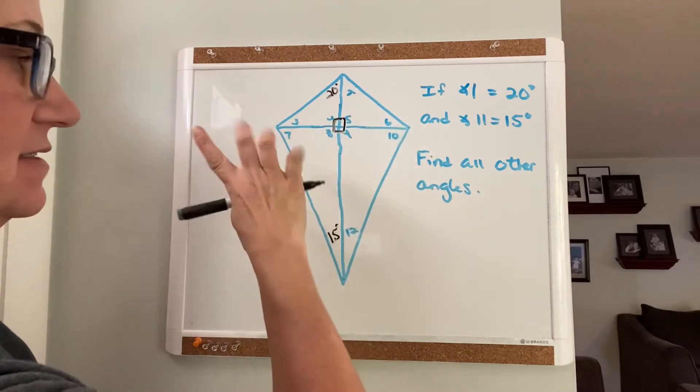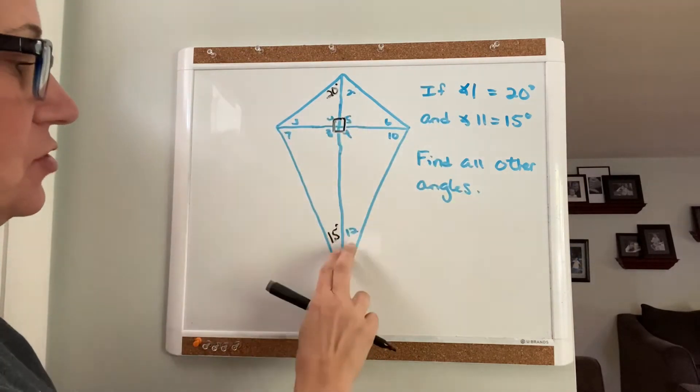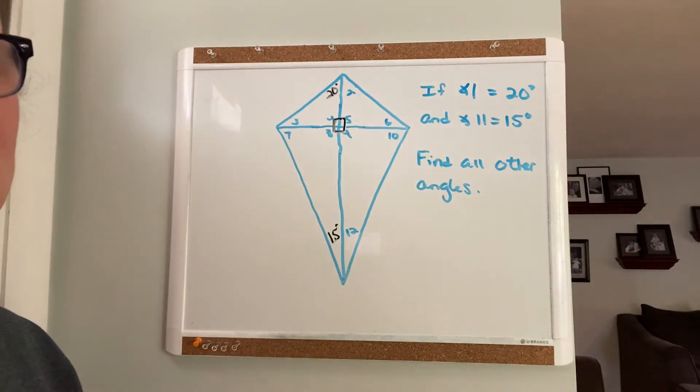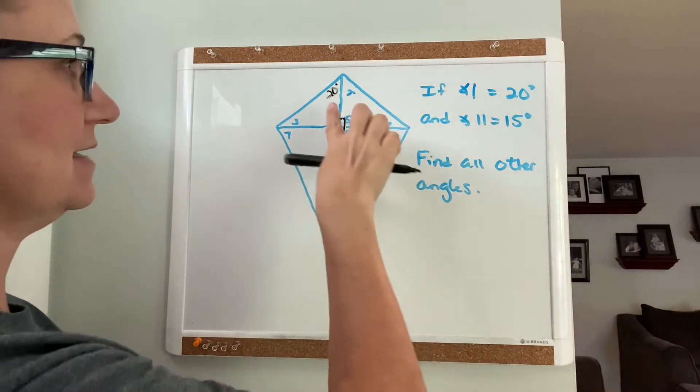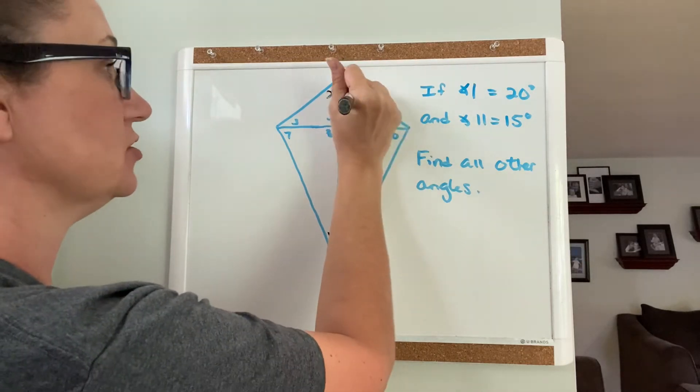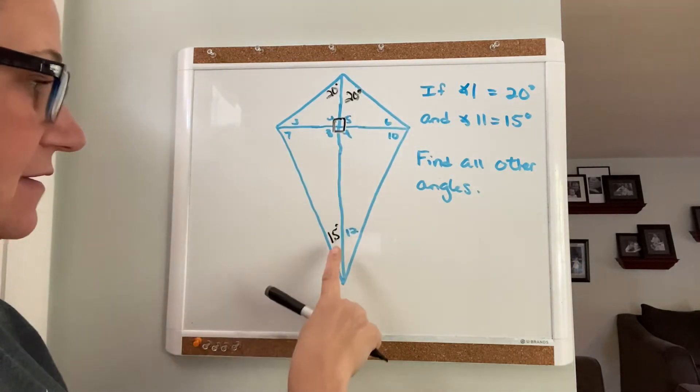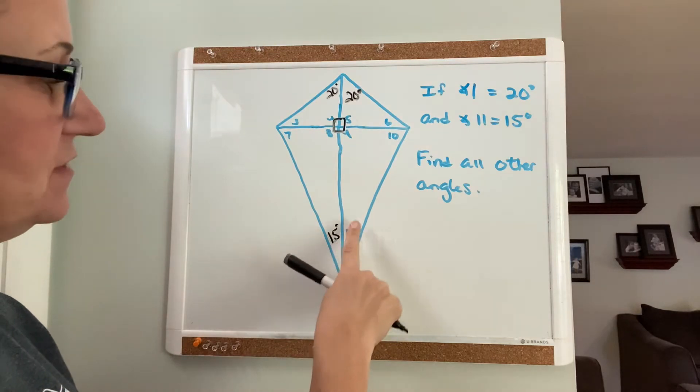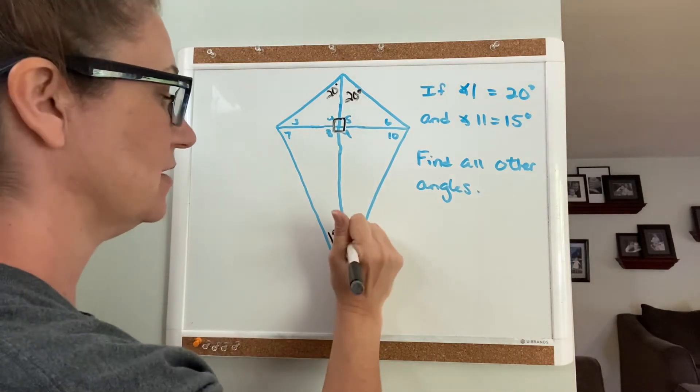Not these angles, that doesn't happen. Angles 1 and 2, and angles 11 and 12 should be the same because the diagonal bisects them. So if angle 1 is 20 degrees, angle 2 is also 20 degrees. If angle 11 is 15 degrees, so is angle 12.